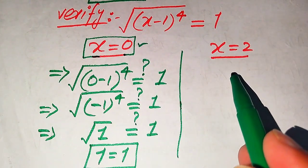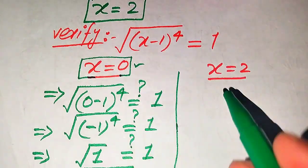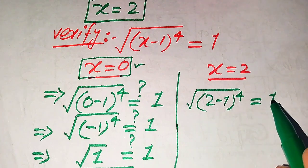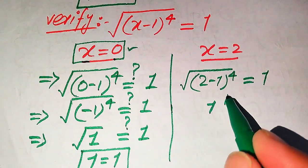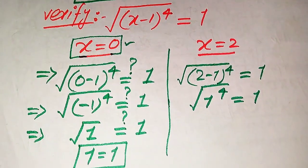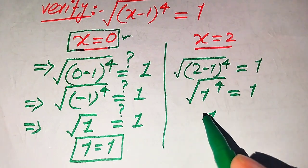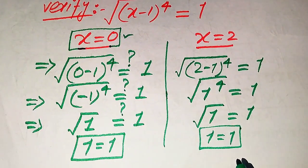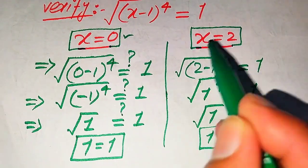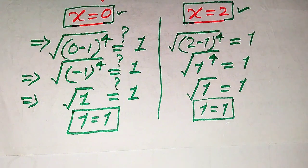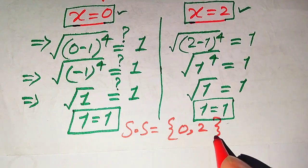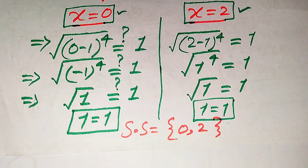Now we verify x equals 2. Substituting into the left hand side gives the square root of (2 minus 1) to the power of 4, which is the square root of 1 to the power of 4. Since 1 to the power of 4 is 1, and the square root of 1 is 1, both sides equal 1. So x equals 2 is also a valid solution. The solution set is {0, 2}. Thank you for watching — please subscribe for more videos.